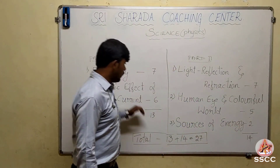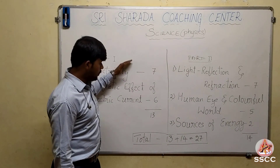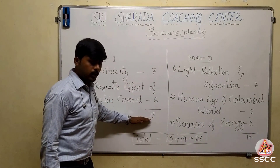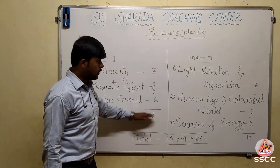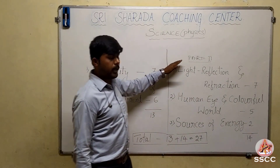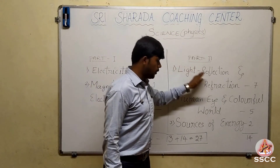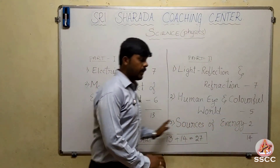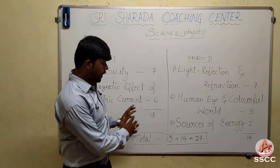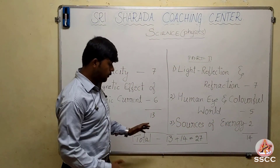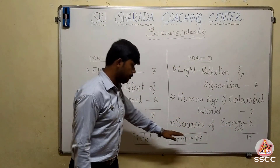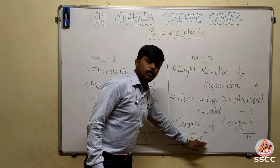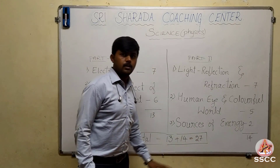Totally, in the part one textbook you can get 13 marks, and in the part two textbook you can get 14 marks. By adding part one and part two together, for your exam you may get 27 marks from Physics.